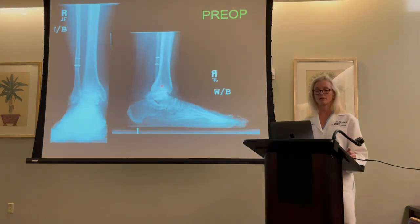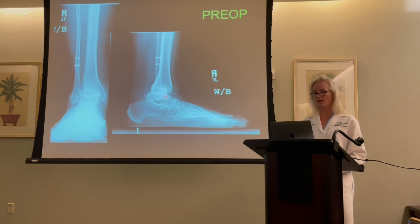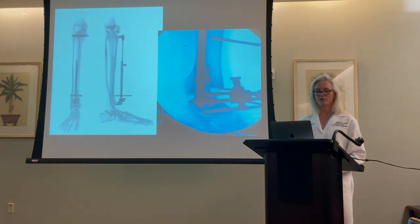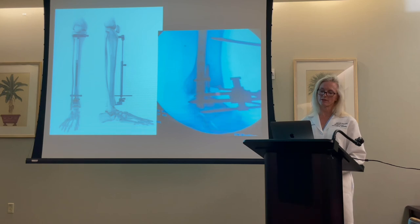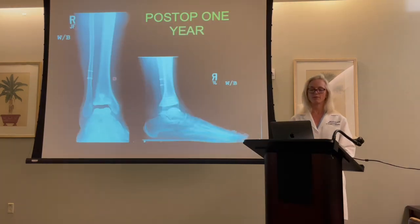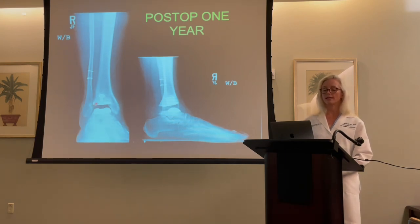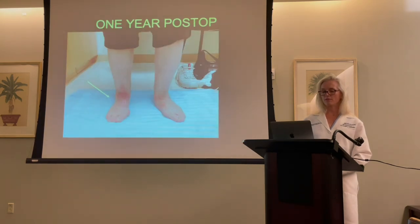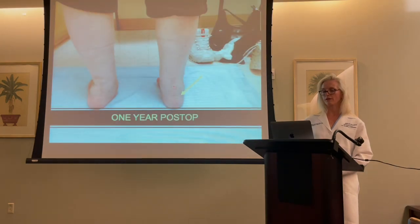Here's an example of a total ankle replacement. Pre-operatively, these are the x-rays — you can see the cartilage is gone, both from the front and from the side. We make an incision down the front of the ankle, use a jig on the outside for alignment, and remove bone from the tibia and from the talus. This is intraoperatively, removing bone from the tibia and then from the talus. We then insert the implants — like a total knee or total hip, there is metal, insert, and metal. This was the replaced ankle at one year post-op, shown from the front and from the back.